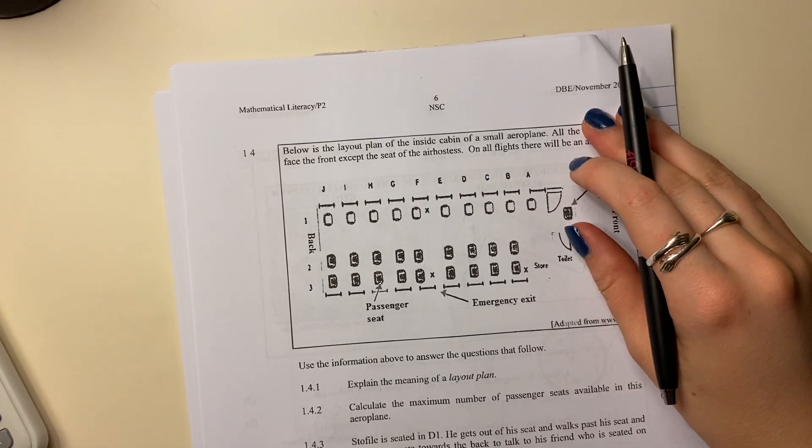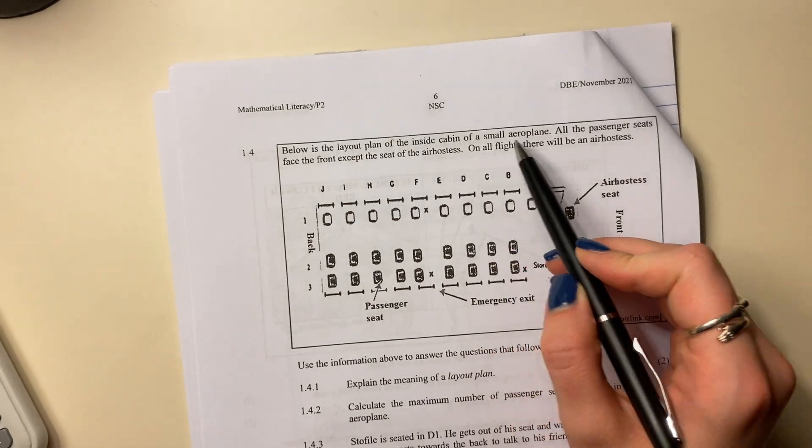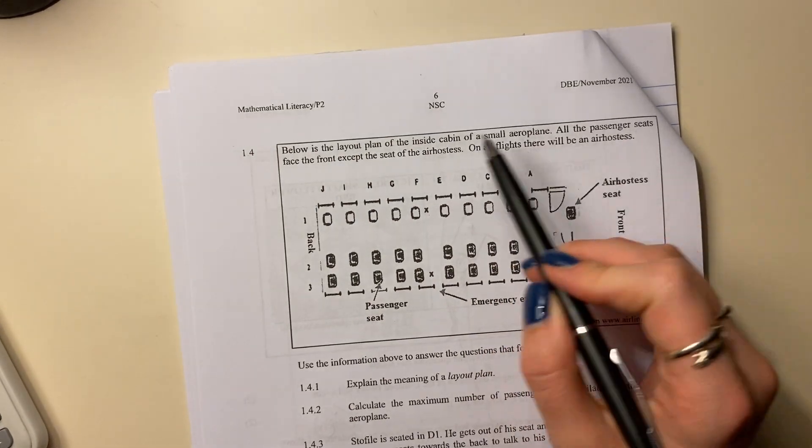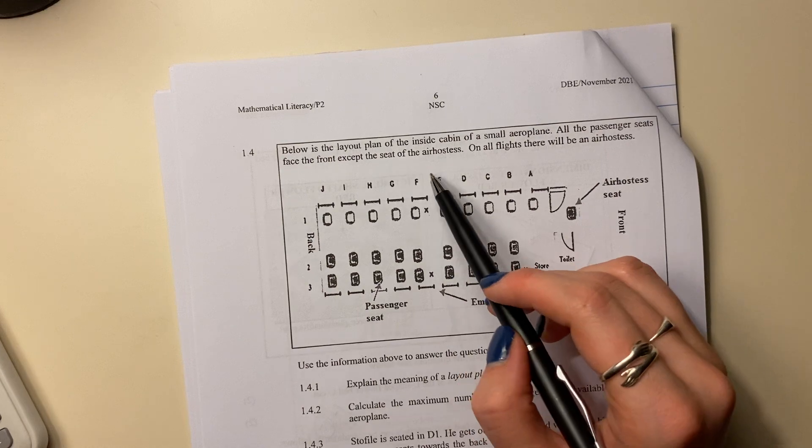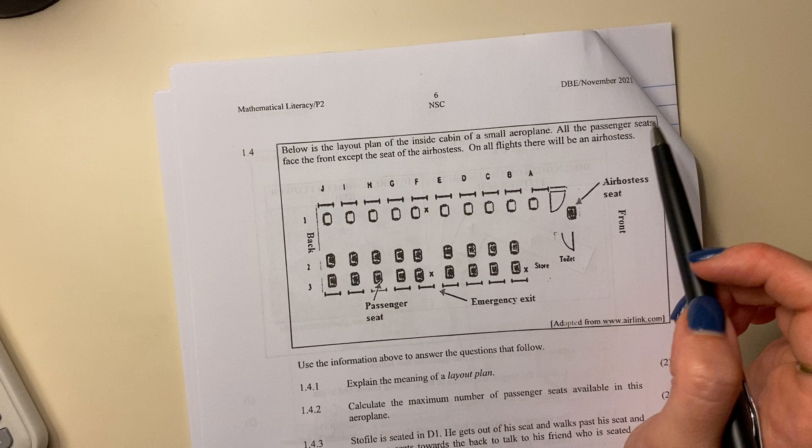Let's finish off question one. Below is the layout plan of the inside cabin of a small airplane. All the passenger seats face the front except the seat for the air hostess. On all flights there will be an air hostess.